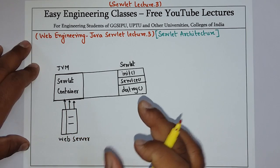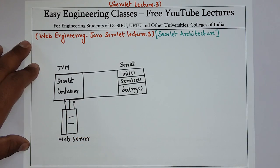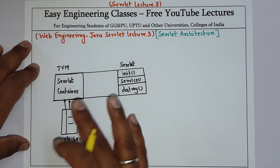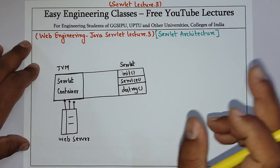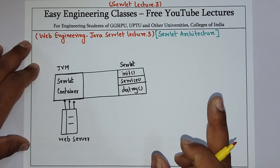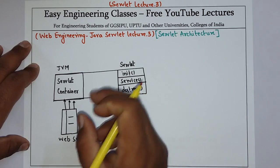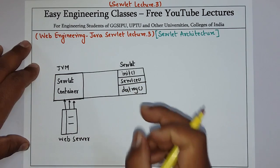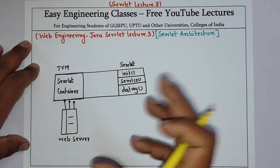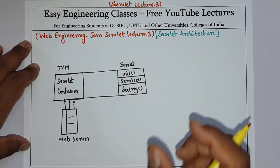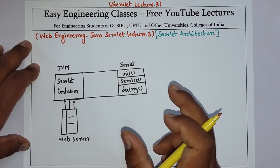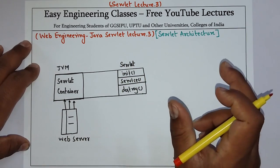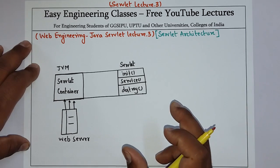What happens in CGI is that for every request, a different process of CGI is created, which is an overburden on the server. But in the servlet, for one session with multiple requests, a single process is created and inside that process different threads are created. Since threads are lightweight and fast in communication, this saves lots of server resources. In servlets, different processes are not created for different requests.